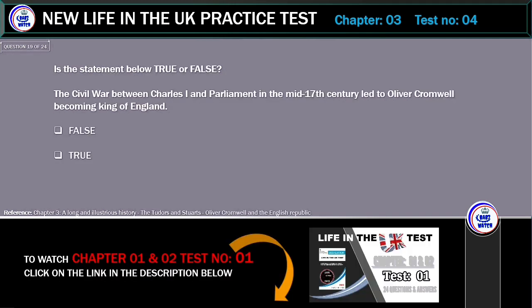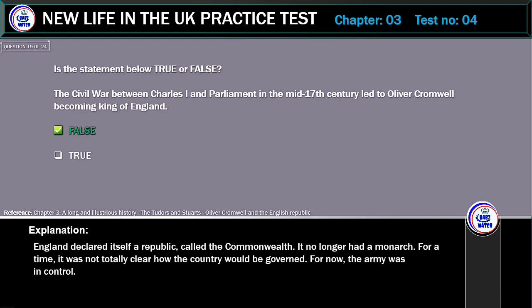Is the statement below true or false? The civil war between Charles I and Parliament in the mid-17th century led to Oliver Cromwell becoming King of England. The correct answer is False. England declared itself a republic, called the Commonwealth. It no longer had a monarch. For a time it was not totally clear how the country would be governed, and for now the army was in control.